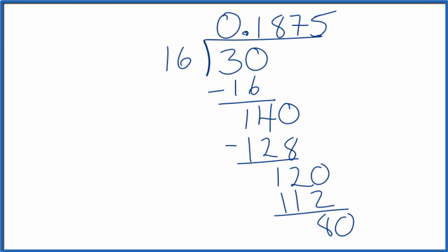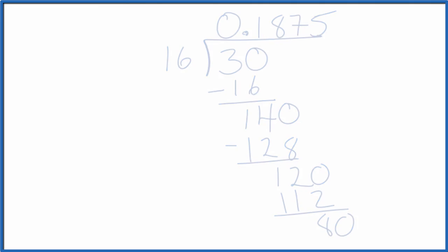The fraction 3/16, we find that to be 0.1875, just like we found on our calculator. This is Dr. B converting the fraction 3 over 16 to a decimal. Thanks for watching.